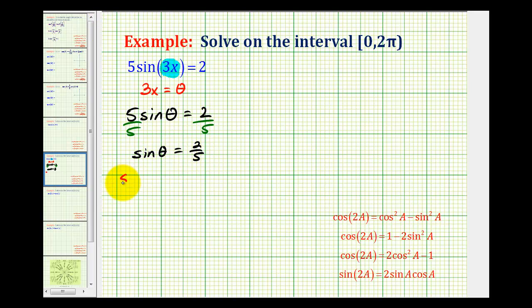If we take inverse sine of both sides, on the left we're left with θ, and on the right we have sin⁻¹(2/5).